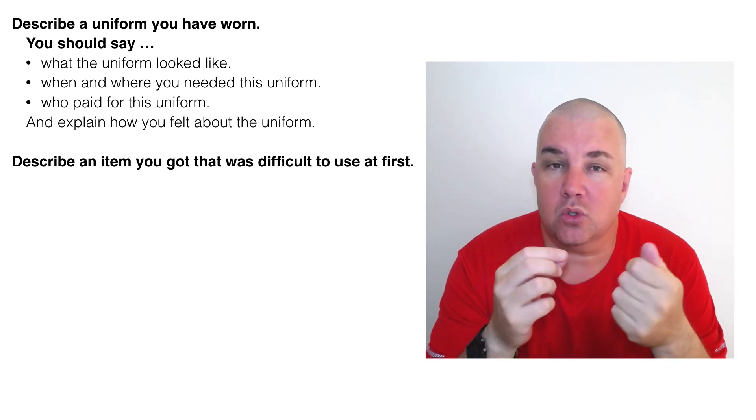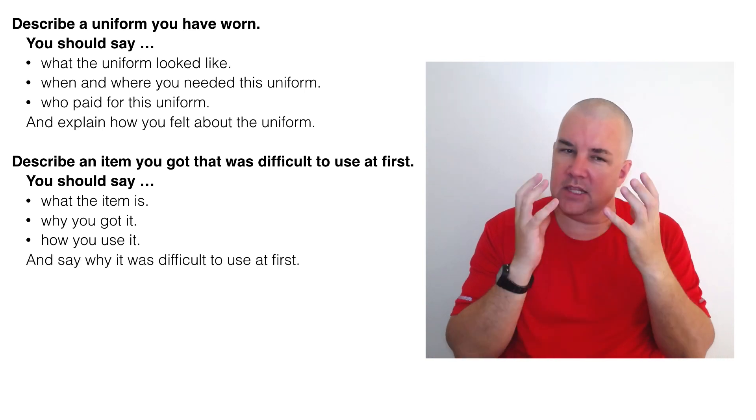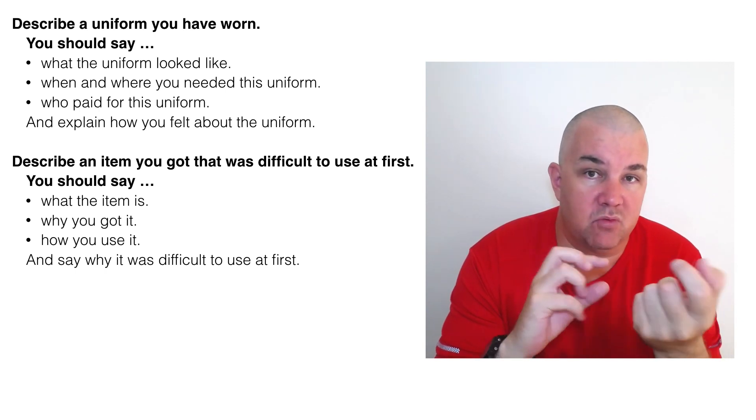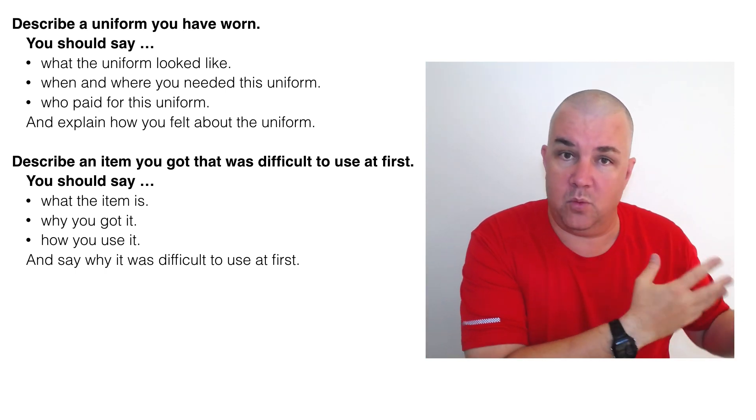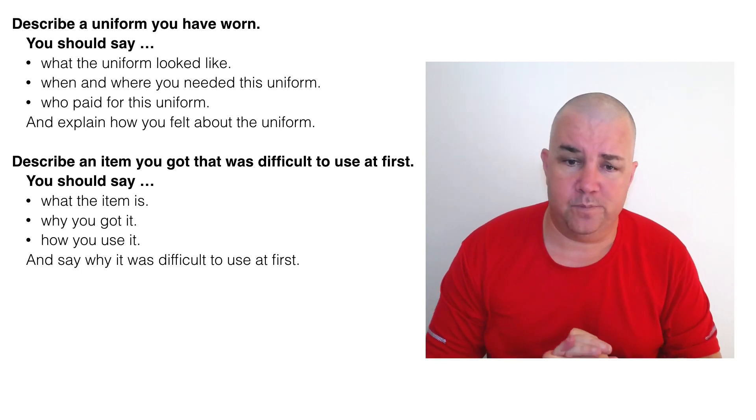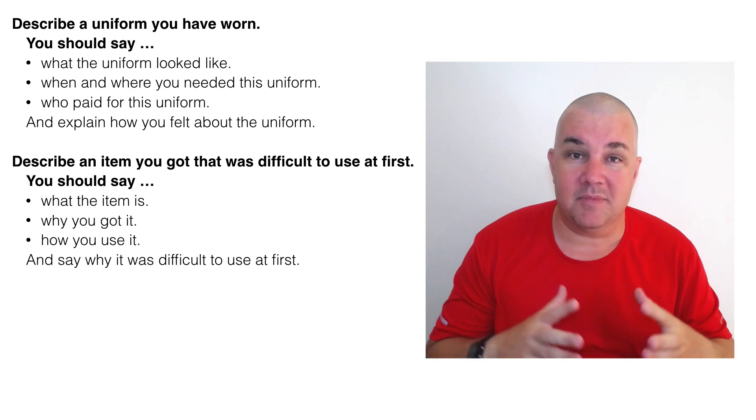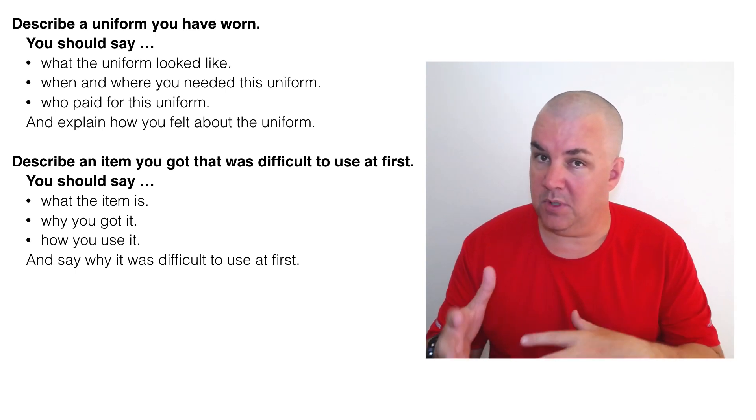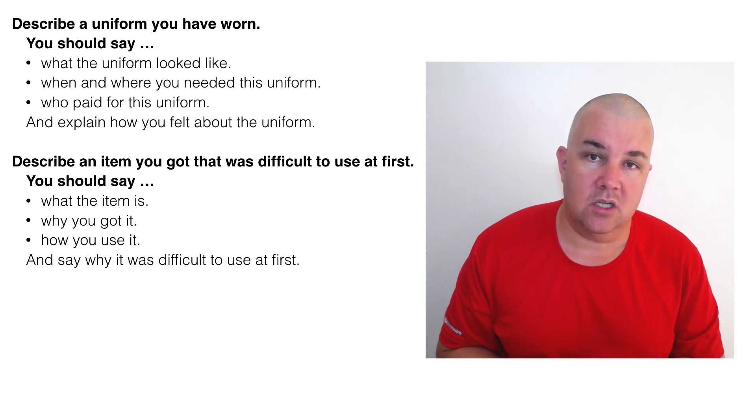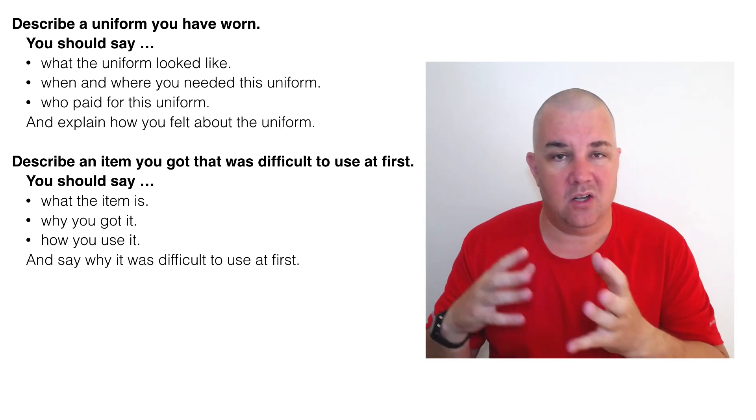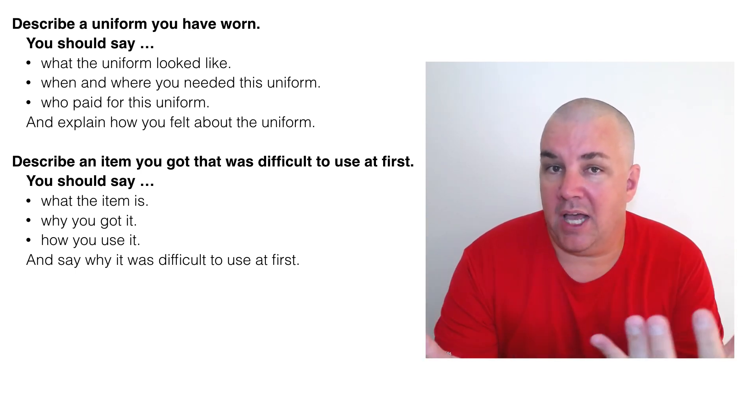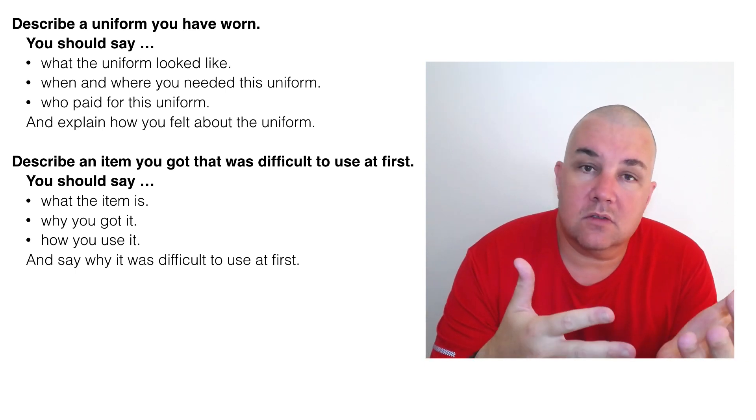Describe an item you got that was difficult to use. So it's an item. Again, a thing that you can hold or touch. What the item is. It may be a computer, a TV with remote control, a new washing machine. I have a washing machine that's a little bit difficult to figure out. So explain the item. Describe it. Size, shape, color. What you use it for. Why you got that item. Why did you get it? Was it a gift? Or I needed it because my new apartment doesn't have a washing machine. Or I needed it because my old computer broke. So I needed a new one. Why did you get it? How do you use it? Now explain it a little bit about how you use it and why it was difficult.